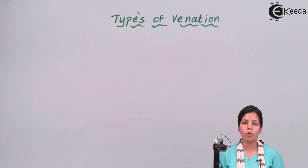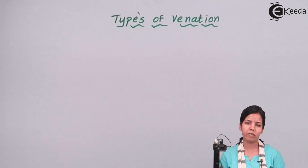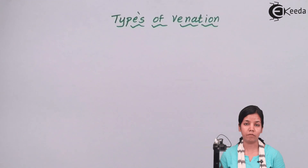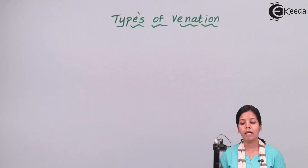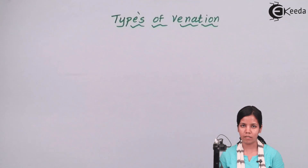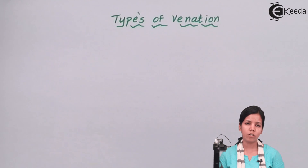Venation. If you consider two different leaves — a mango leaf and a peepal leaf — there's a difference in the shape, in the structure, and also in the veins. Venation is nothing but the arrangement of veins or veinlets in the lamina, or you can say the leaf plate. Venation could be of two different types.